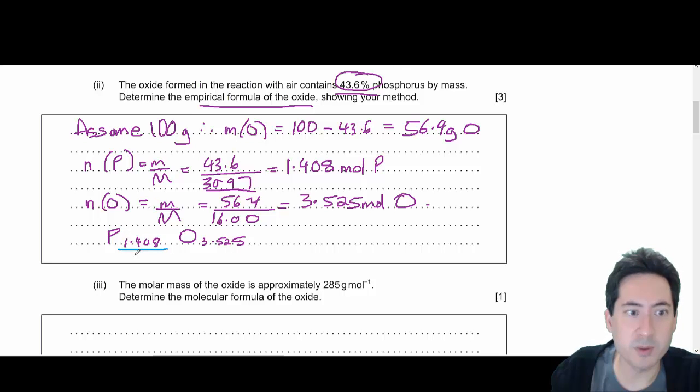you always divide it by the smallest number, so divide that by 1.408, divide this by 1.408. If you plug that into a calculator, you'll get P is 1. You've got O is 2.5.